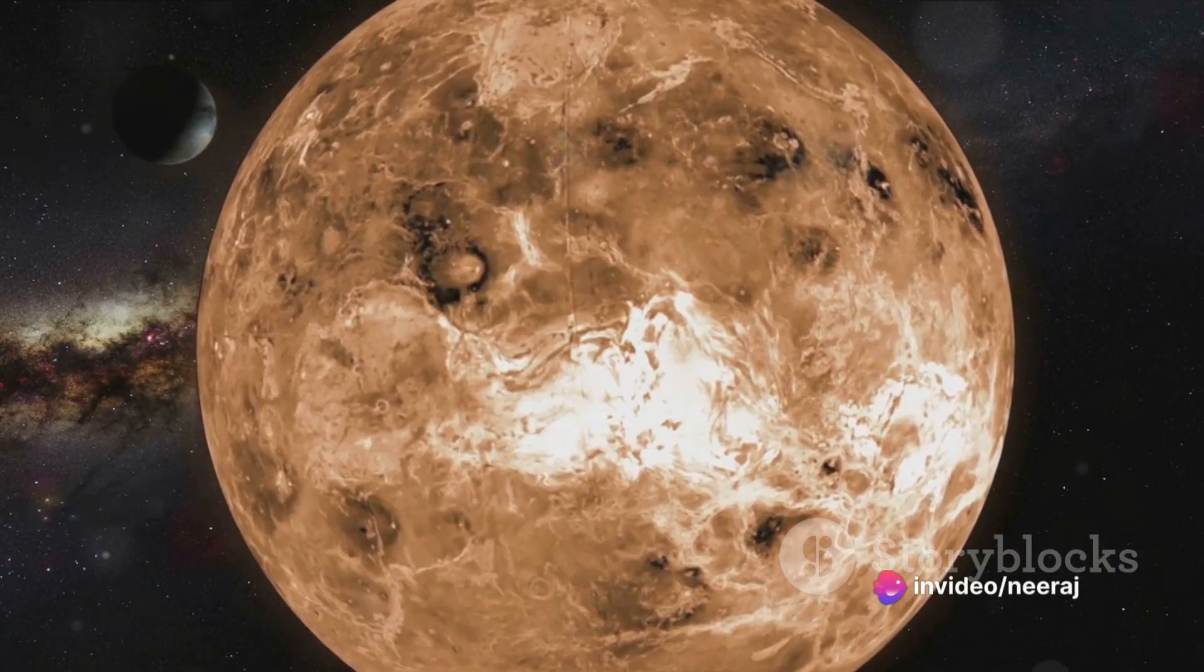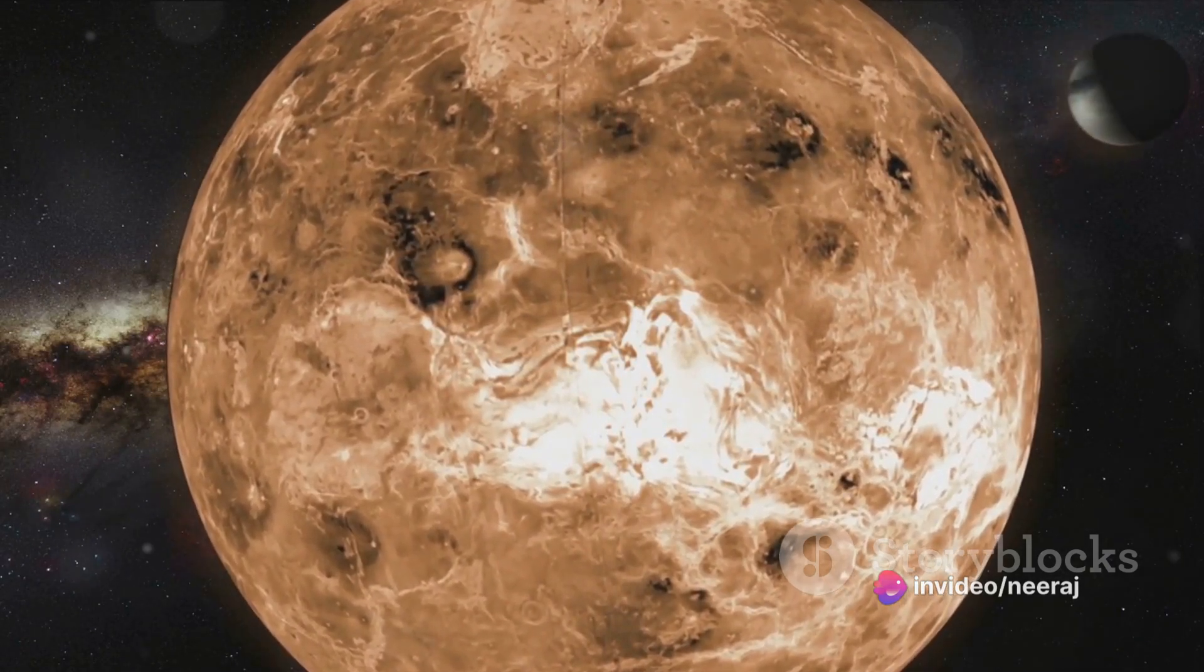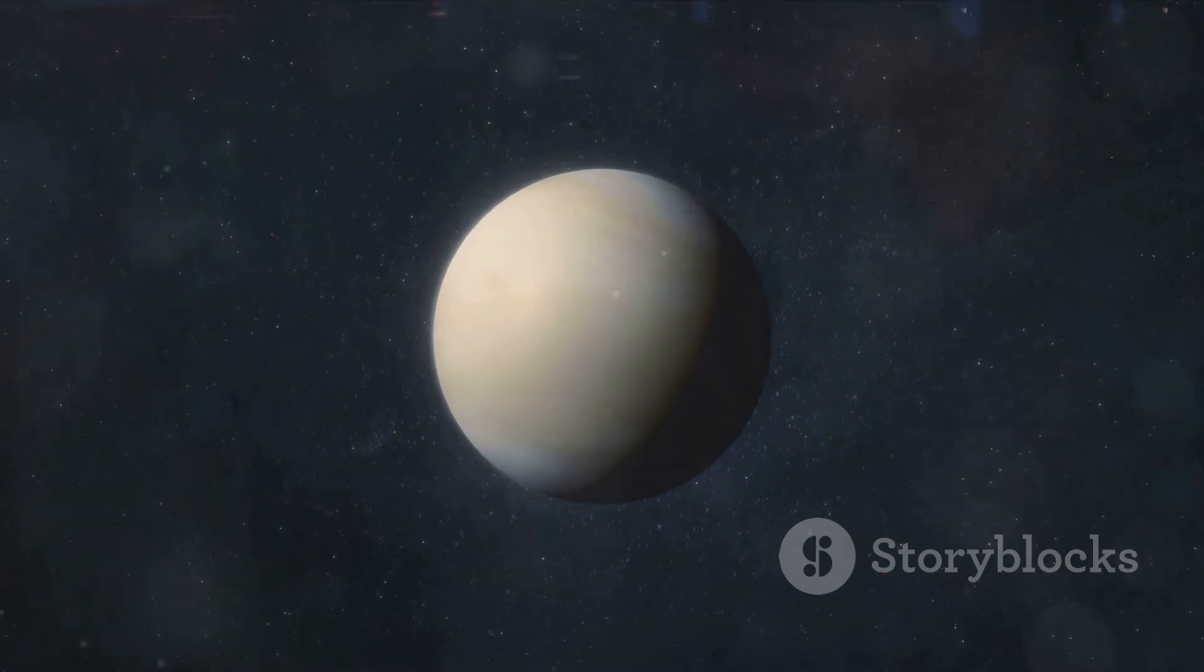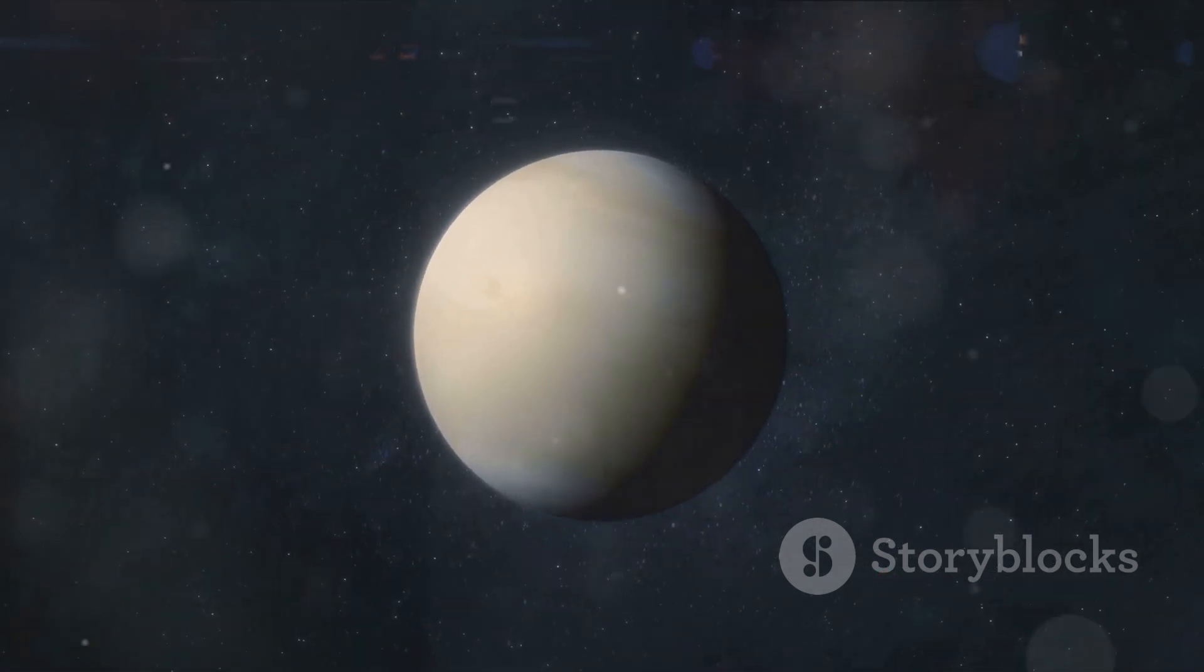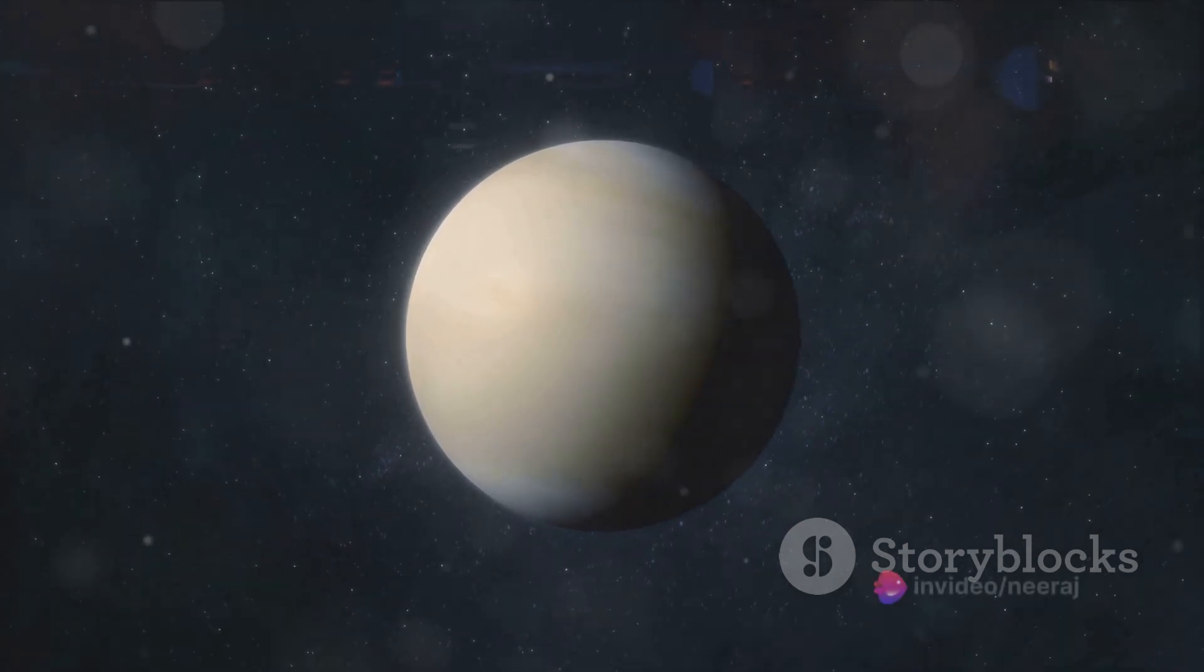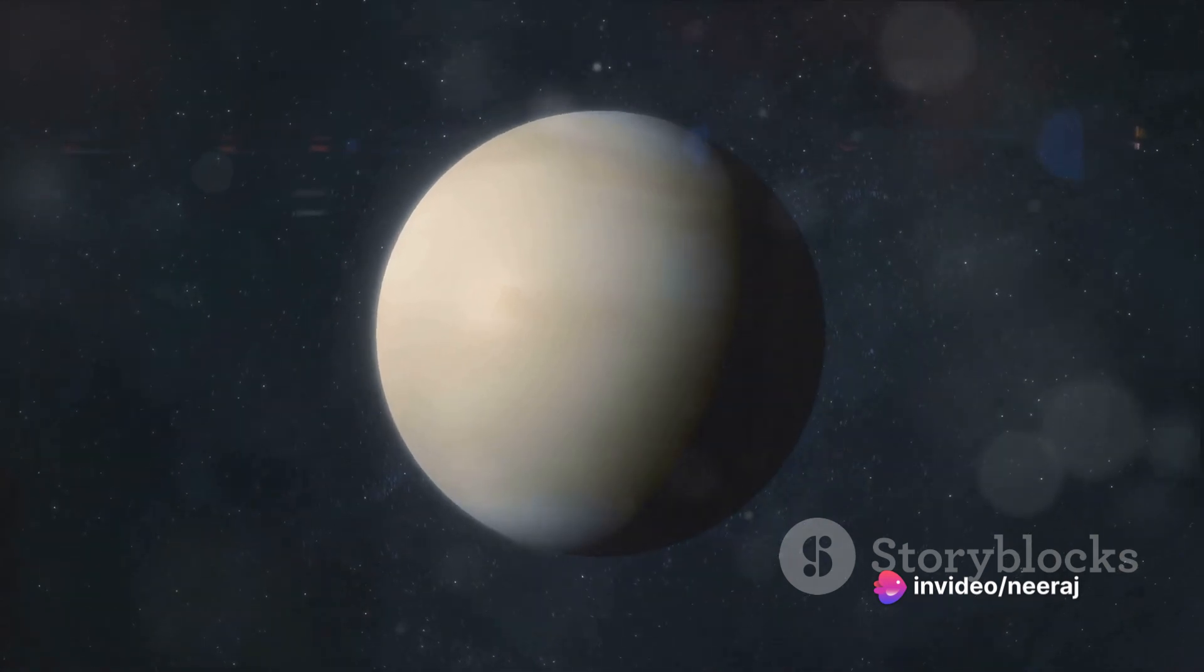Now you might be wondering about water. After all, where there's heat and pressure, there's usually the potential for water. But not on Venus. The planet's scorching temperatures and corrosive atmosphere make it impossible for liquid water to exist. Any water that might have been on Venus's surface would have evaporated long ago, leaving behind a dry and desolate landscape.